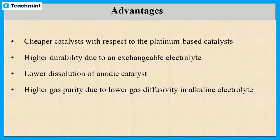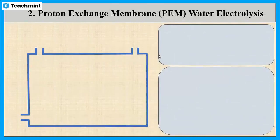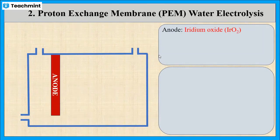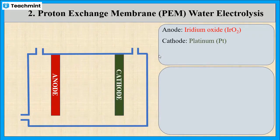Now, let us see the second type of electrolyzer, that is the proton exchange membrane or PEM electrolyzer. This electrolyzer contains two electrodes. Anode is catalyzed by iridium oxide and cathode is catalyzed by platinum.